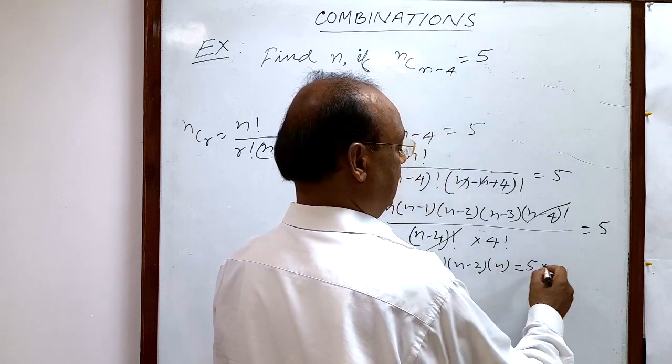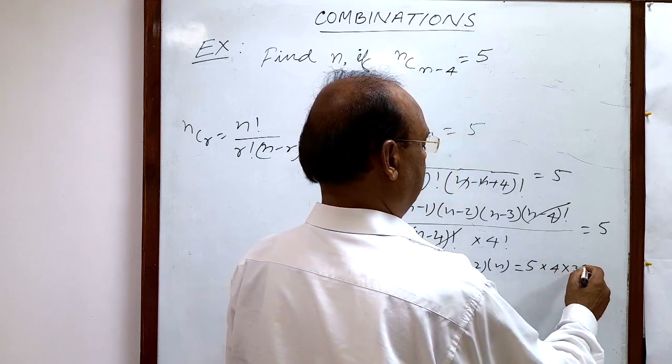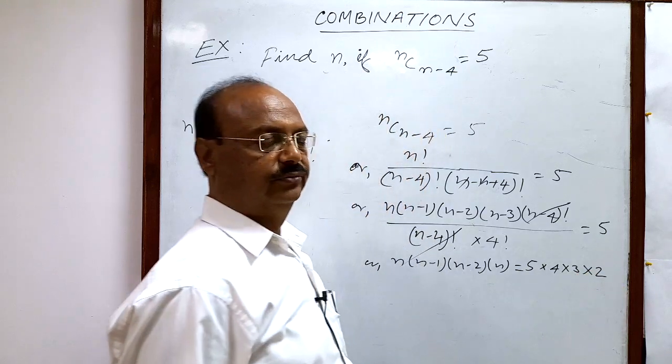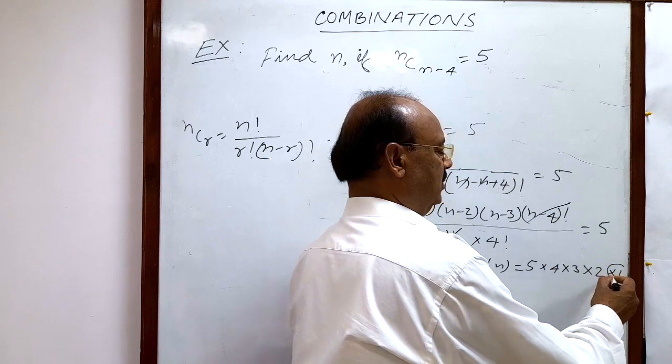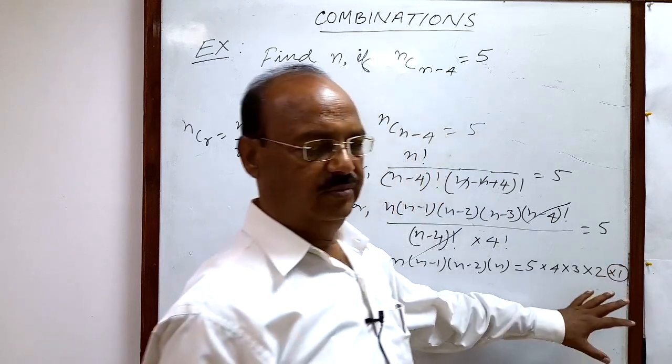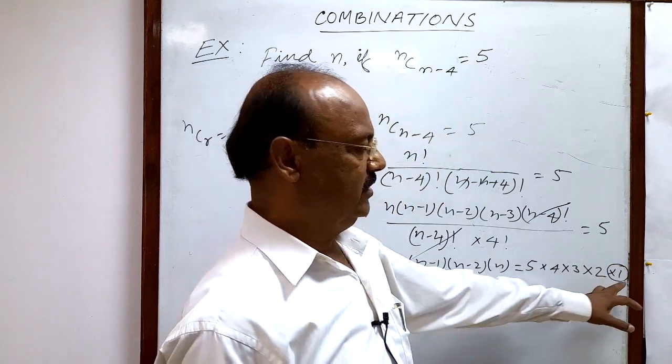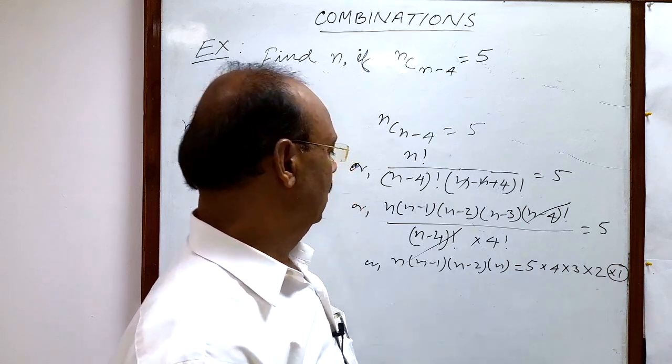4 factorial, which can be written as 4 × 3 × 2. We can write 1 also, but multiplying by 1 is not going to change the result of this calculation, so it's not necessary to write 1 here.